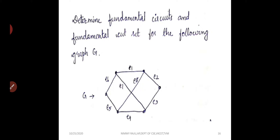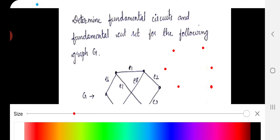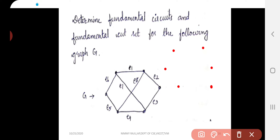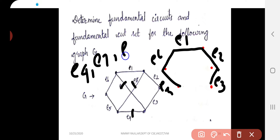This graph has a total of 6 vertices. We plot the vertices first. With 6 vertices, we have edges E1, E2, E3, E5, E6 forming the spanning tree. The remaining edges — E4, E7, E8 — are the codes. Adding each code to the spanning tree gives us the fundamental circuits.